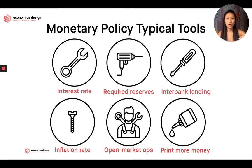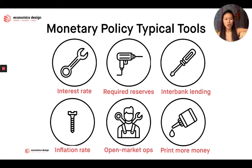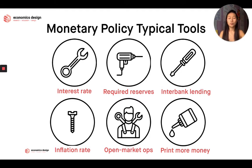Interbank lending is the lending between banks — how banks lend each other money. You can also reduce that rate. You can loosen it and allow more interbank lending and reduce interest rates, so it's easier for banks to borrow money, put money into the economy, and try to stimulate some growth.